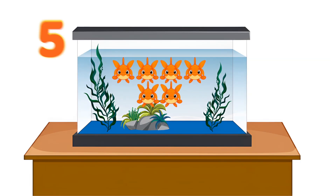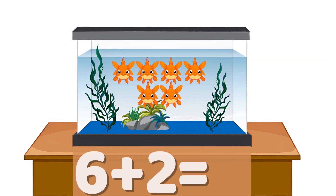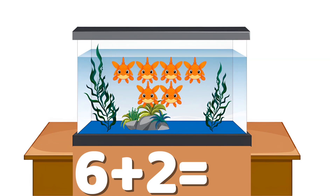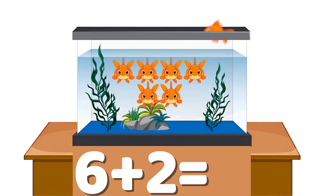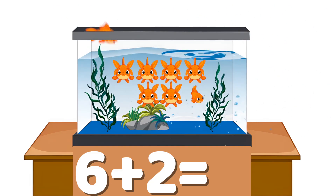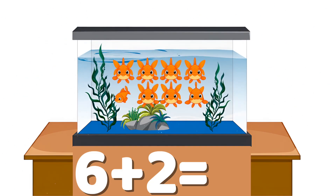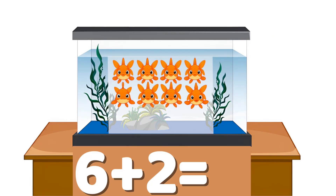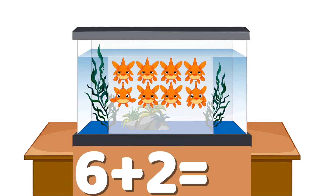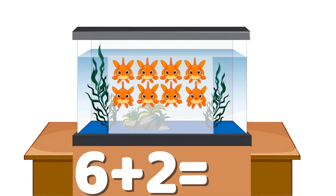Example number five: six plus two. Six fish are already in the tank. Two more fish swim inside. Let's count: one, two, three, four, five, six, seven, eight. Six plus two equals eight.